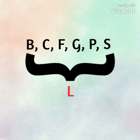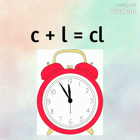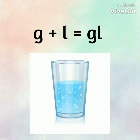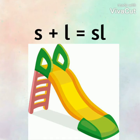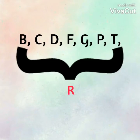Adding L: B plus L — blend as 'black', C plus L — blend as 'clock', F plus L — blend as 'flag', G plus L — blend as 'glass', P plus L — blend as 'plant', S plus L — blend as 'slide'. Now we will create a few more blends.